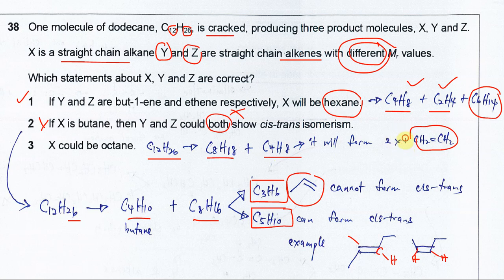It forms two molecules of this alkene, so it cannot be octane. If X is octane, it cannot meet the requirement of different molar mass. The last one is also wrong, only the first one is correct.